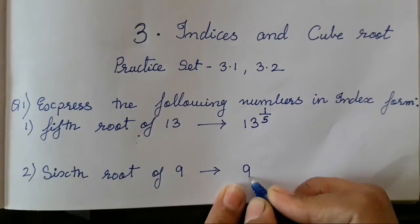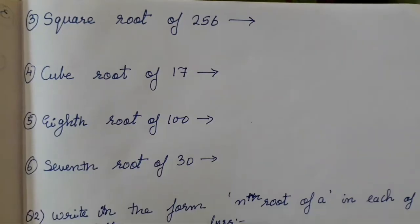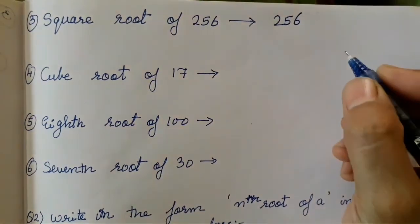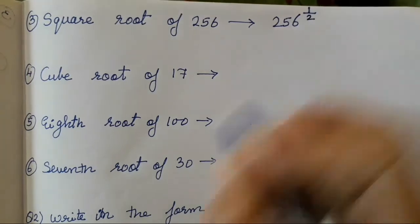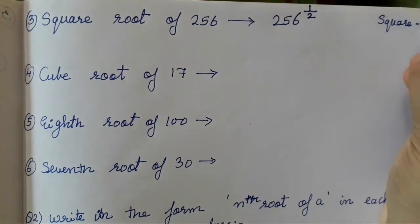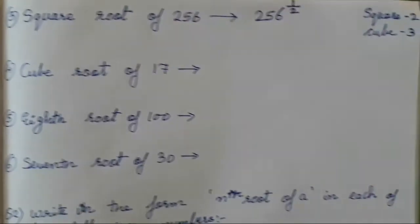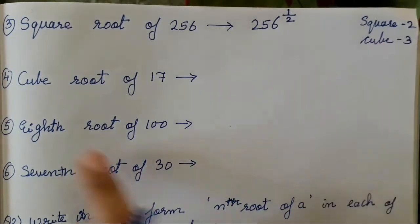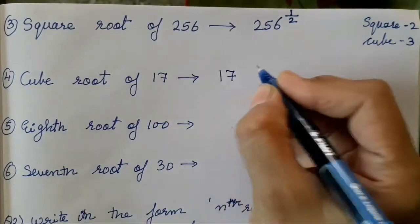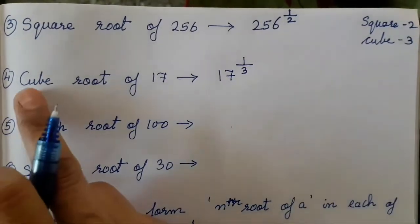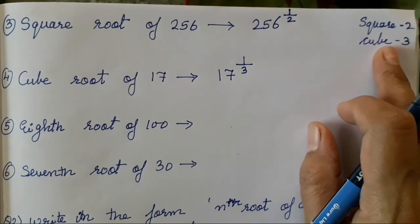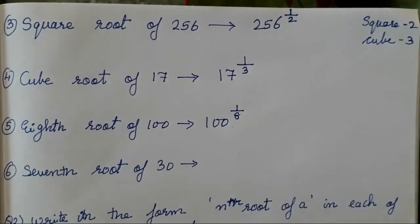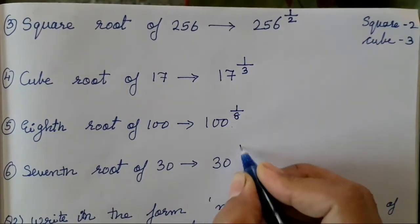Square means 2 and cube means 3. Cube root of 17 means 17 raised to 1 upon 3. Many of you may wonder what cube and square mean — I have written it for reference. 8th root of 100 means 100 raised to 1 upon 8. 7th root of 30 means 30 raised to 1 upon 7.